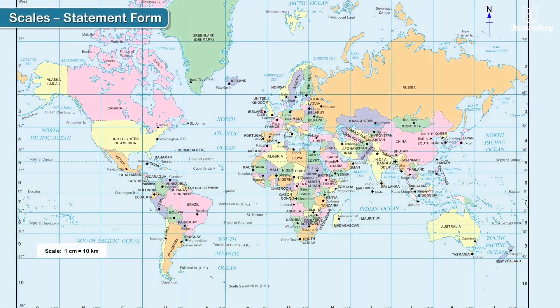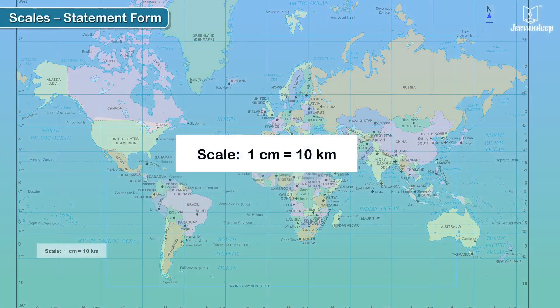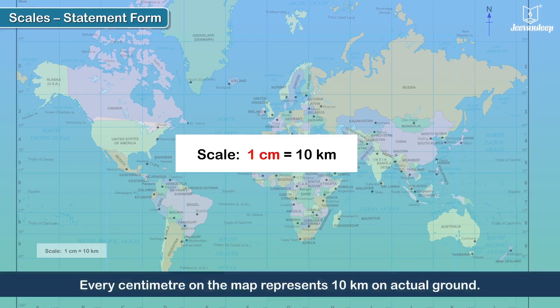Statement Form: Some maps express a scale in a statement form. If the scale of a map is set at 1 cm for every 10 km, it means that every centimeter on the map represents 10 km on actual ground.